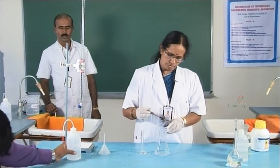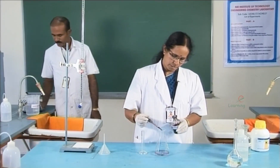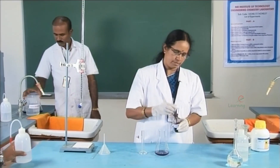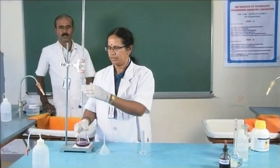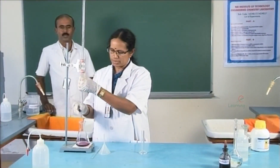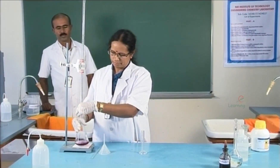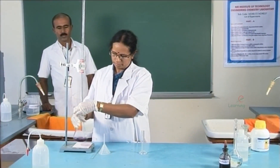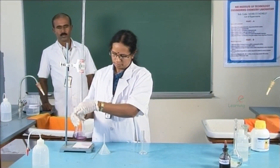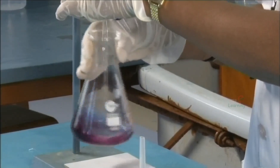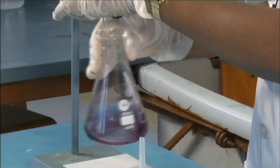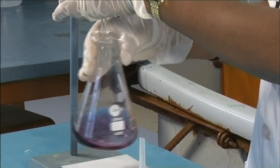2 to 3 drops of indicator are added and the third trial is continued with the same procedure. The titration is repeated to get the concordant values. A minimum of three trials have to be conducted.